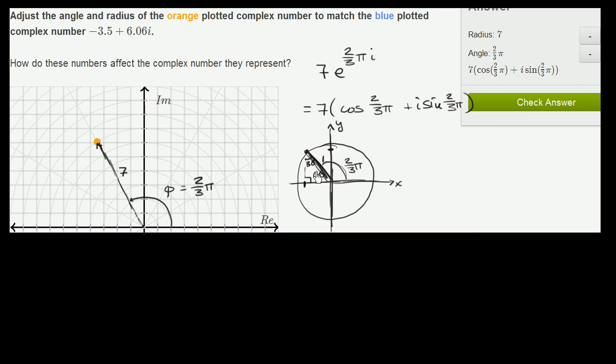So the 30-degree side will have length 1 half. So this coordinate right over here is going to be negative 1 half. And then the side opposite the 60-degree side is square root of 3 times the 1 half. So this right over here is going to be square root of 3 over 2. And you could verify that on a calculator if you like.